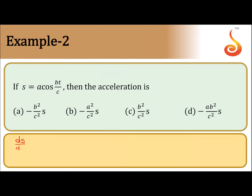ds by dt is minus a sine bt by c, and the derivative of bt by c is b by c. So this is nothing but velocity. Velocity is minus ab by c times sine bt by c.